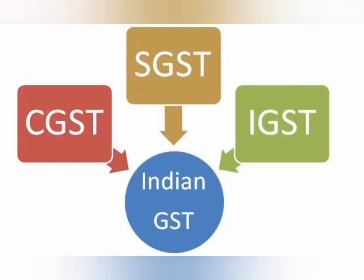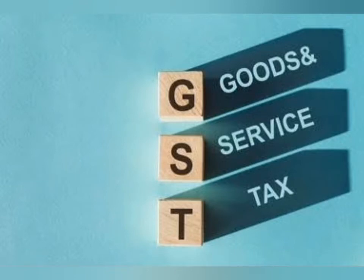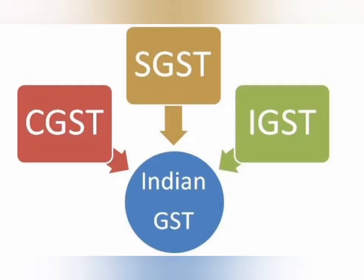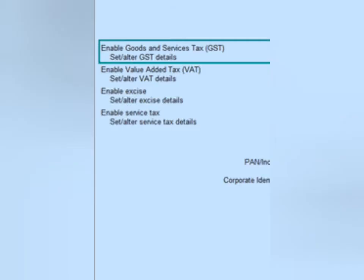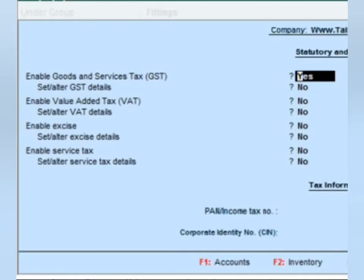Then you have to press Alt+GST. When you press Alt+GST, you can enable GST. In GST there are CGST, SGST, IGST and others. If you want to make entries with GST, you have to enable GST — that is very important. Also, for the purpose of enabling GST, you require a GSTIN number.